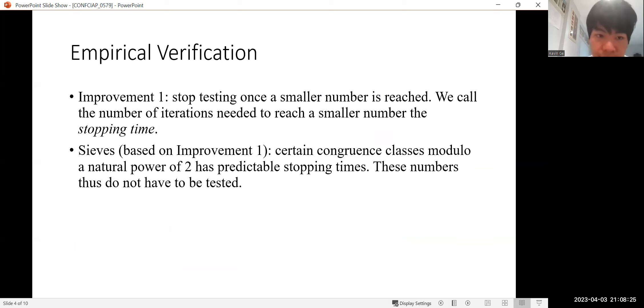So we're going to talk about two improvements in our algorithms. Improvement 1 is the idea that we can stop testing once a smaller number is reached. This is so because we're testing in ascending order, and once we reach a smaller number, we know that number has been tested before, and therefore the remaining iterates can be spared.